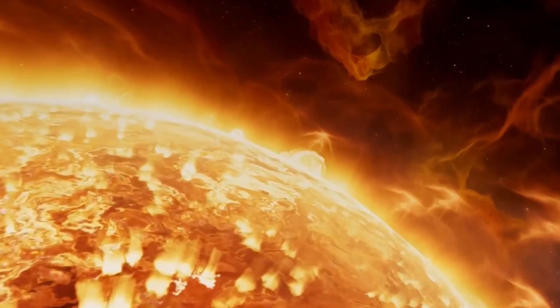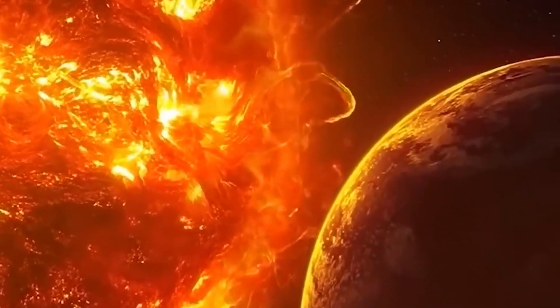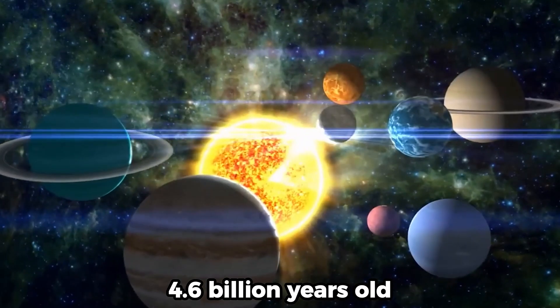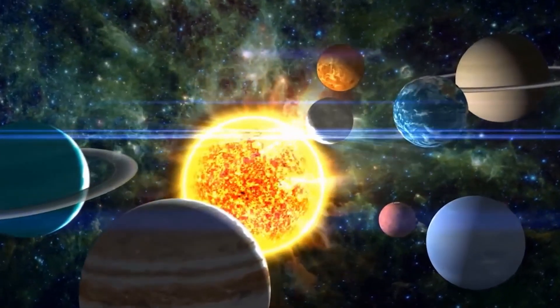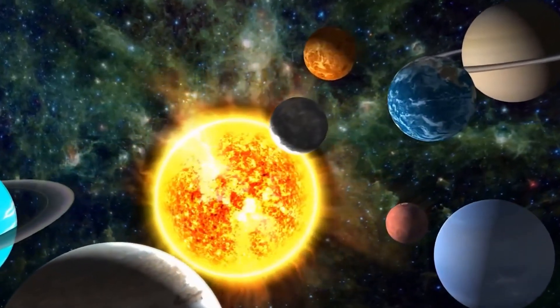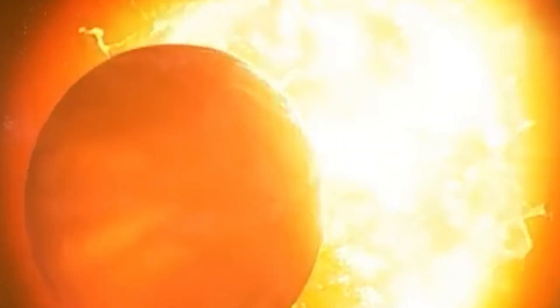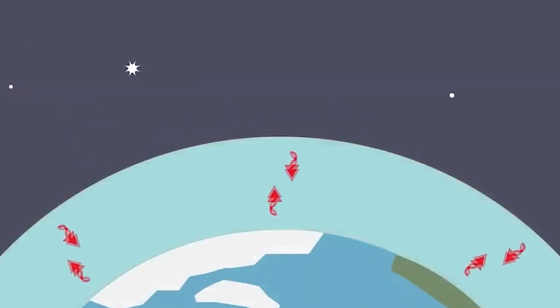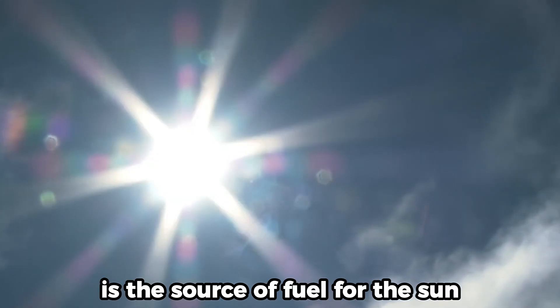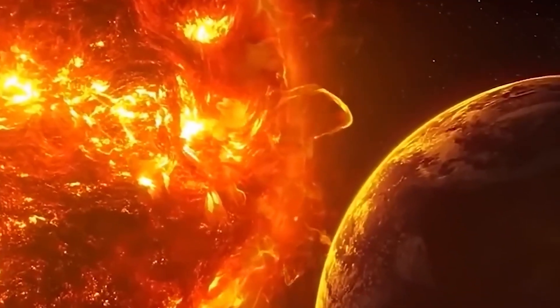In the same way that every other star has a finite lifespan, so does our Sun. It has been estimated to be approximately 4.6 billion years old and is currently regarded to be in the midst of its life cycle, which places it in the category of a main sequence star. The transition of hydrogen into helium, which is the source of the energy and light required for life to survive on Earth, is the source of fuel for the Sun.